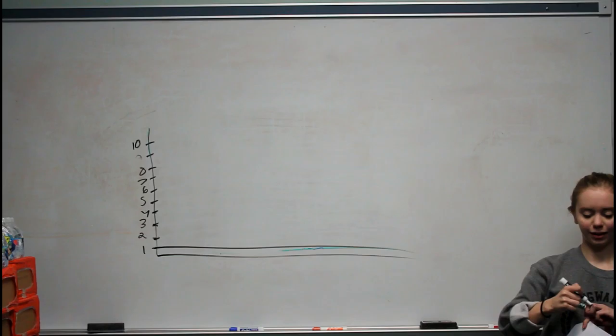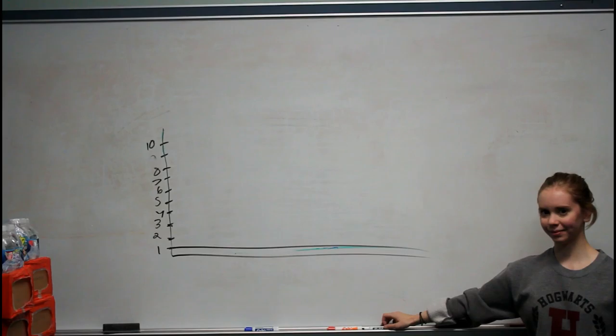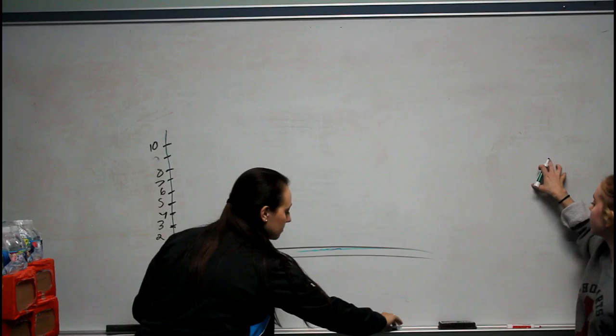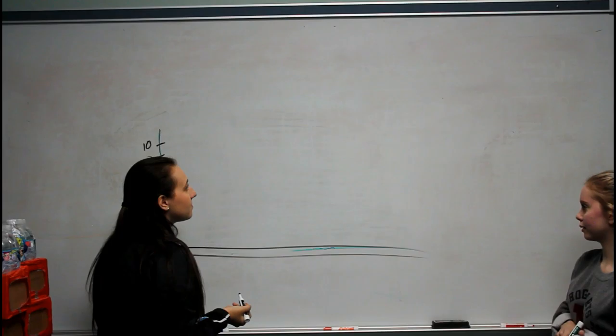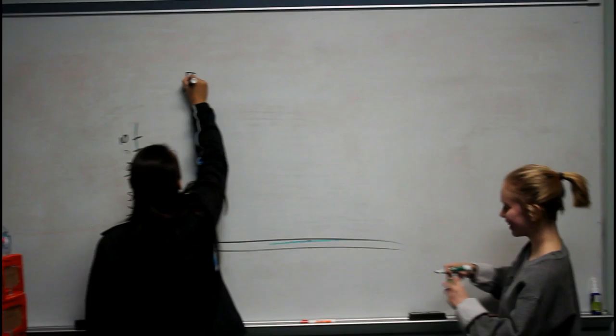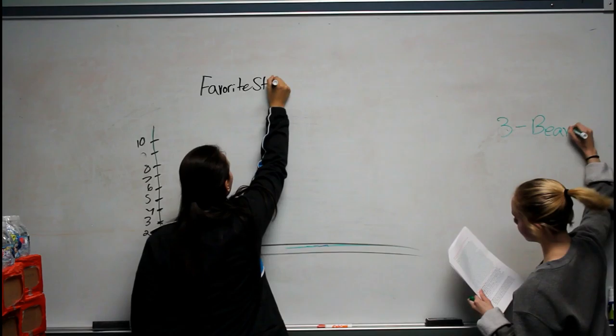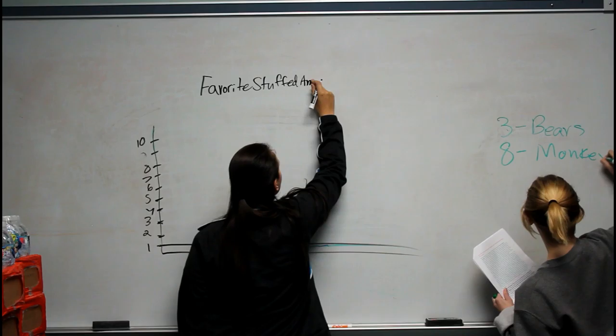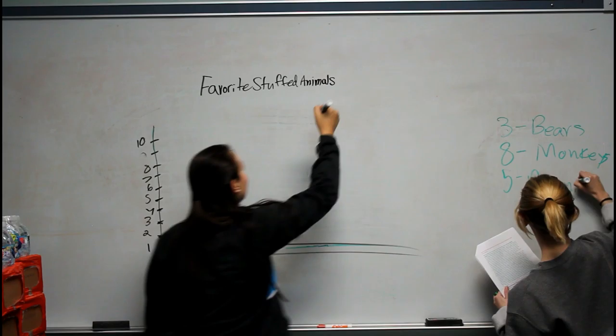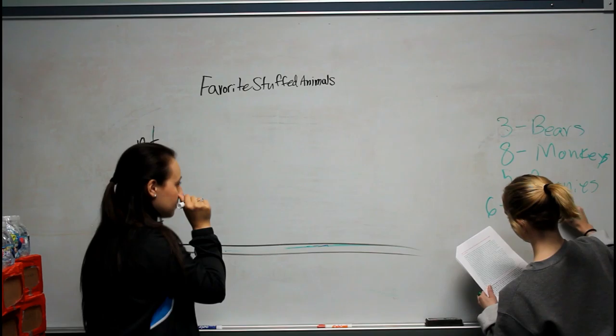And our last one — Michaela, can you be my volunteer please? We are going to be graphing stuffed animals. What can we title it? Favorite Stuffed Animals. Let's do that. We're going to have 3 bears, 8 monkeys, 5 bunnies, and 6 puppies.